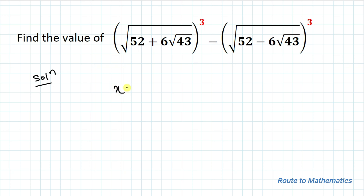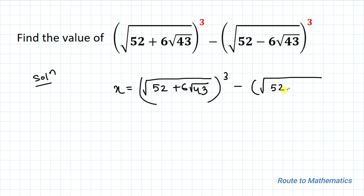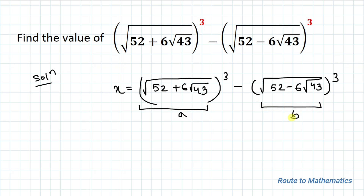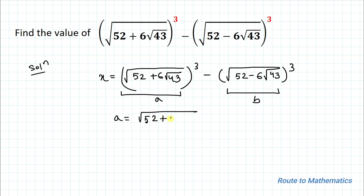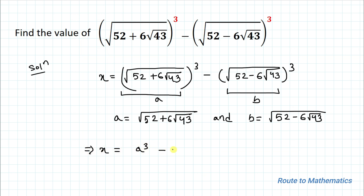Let's take x equals to the cube root of (52 + 6√43) minus the cube root of (52 - 6√43). Let's call the first radical A and the second radical B. So A equals the cube root of (52 + 6√43) and B equals the cube root of (52 - 6√43). We can write the given expression as x equals A cube minus B cube.